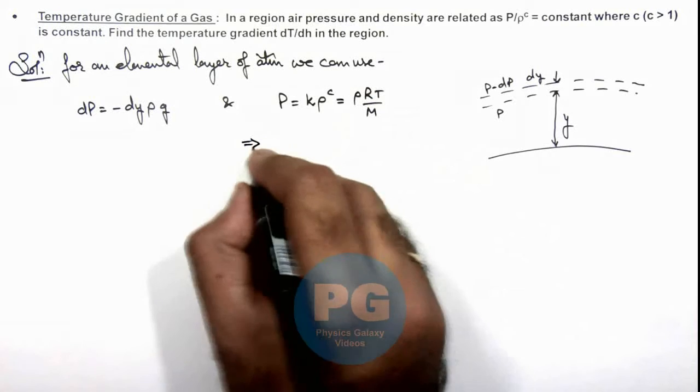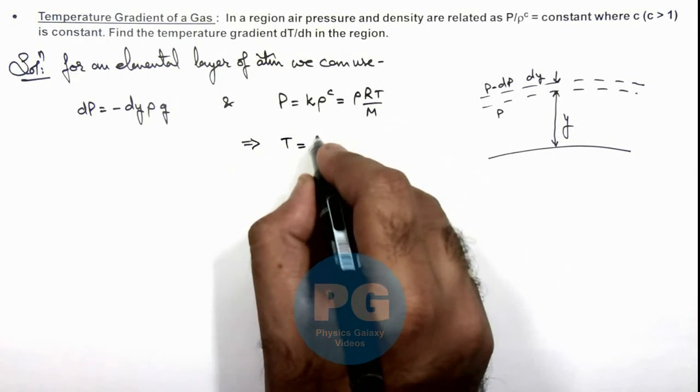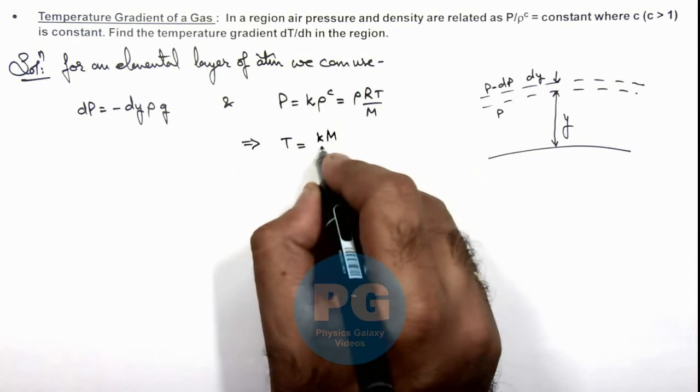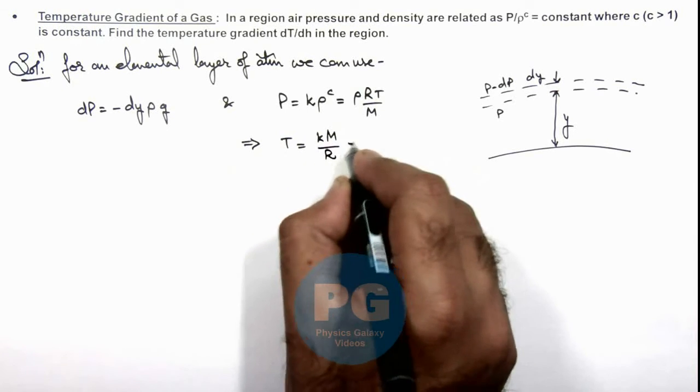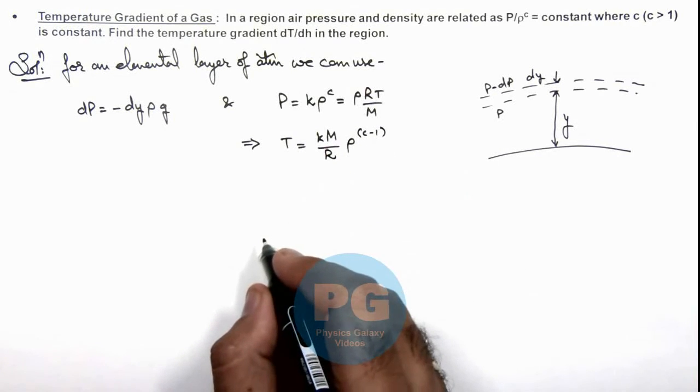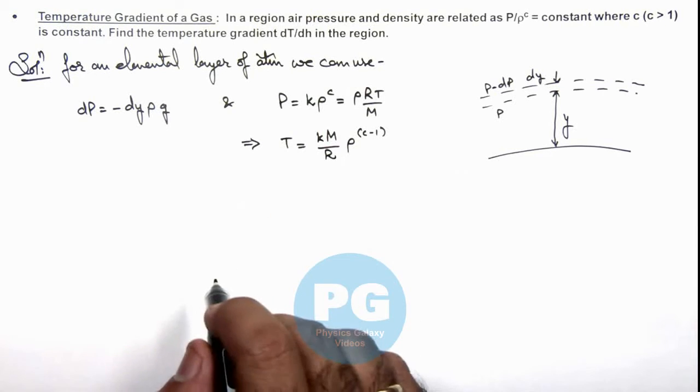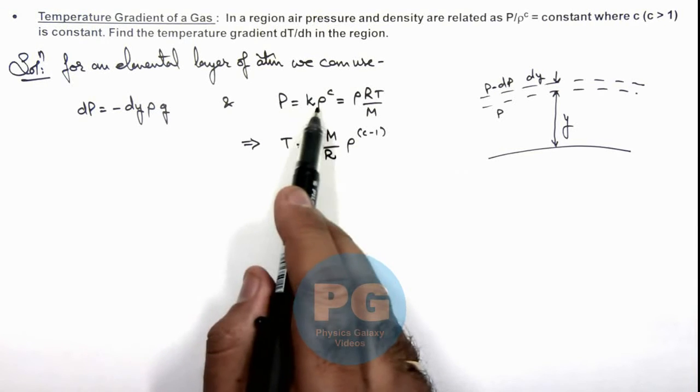As k em by r multiplied by ro to power c minus 1. So from here we are having the value of temperature in terms of density and pressure we know it is k ro to power c.